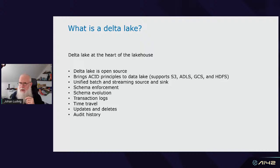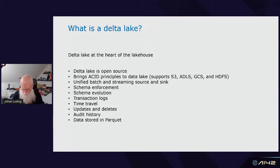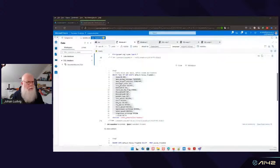Delta Lake also has a transaction log, which means you can see changes happening over time and manage them. It supports time travel, allowing you to go back and look at how a table looked a week or a month ago. Because of ACID principles, it also supports updates and deletes, so you can do merge and slowly changing dimension types of queries. It keeps track of audit logs — query logs, what changed when, and who updated or deleted a row. Underneath the hood, data is stored in parquet files.